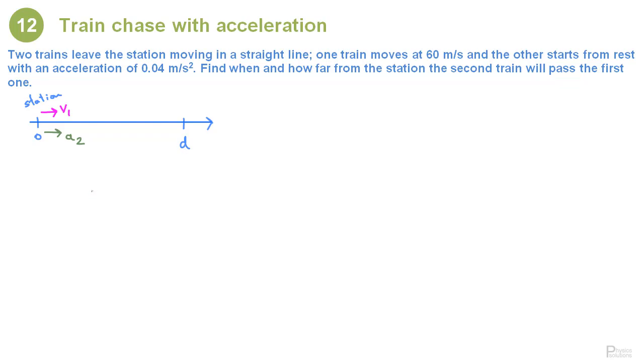We continue writing the equations for the two trains. For train one we write the position as x1 = x10 plus velocity times time. This term is zero because we have chosen our coordinate so that the train starts from this station which is the coordinate x equals zero. So the train starts from the origin and this is x1 = v1 t.